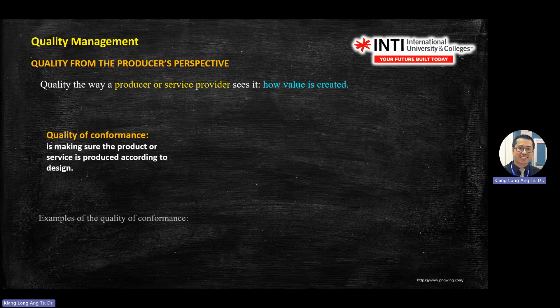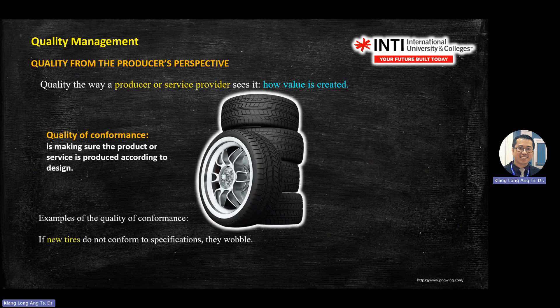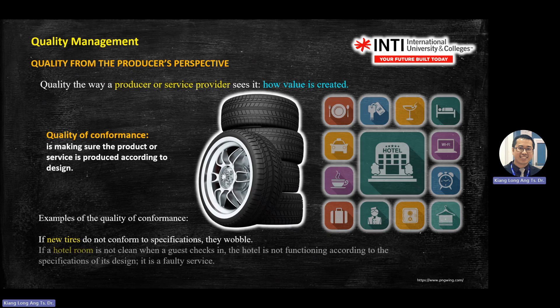From the producer or factory perspective, they use the term 'quality of conformance.' Quality of conformance means making sure the products behave as designed — produced according to design conformance. For example, new tires that do not conform to specification will be wobbled. For a hotel room, if it is not clean, it does not have quality of conformance.